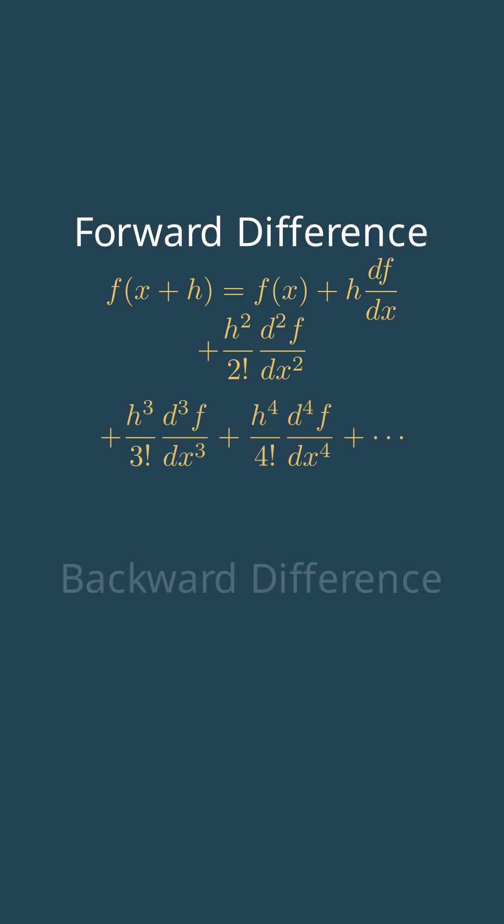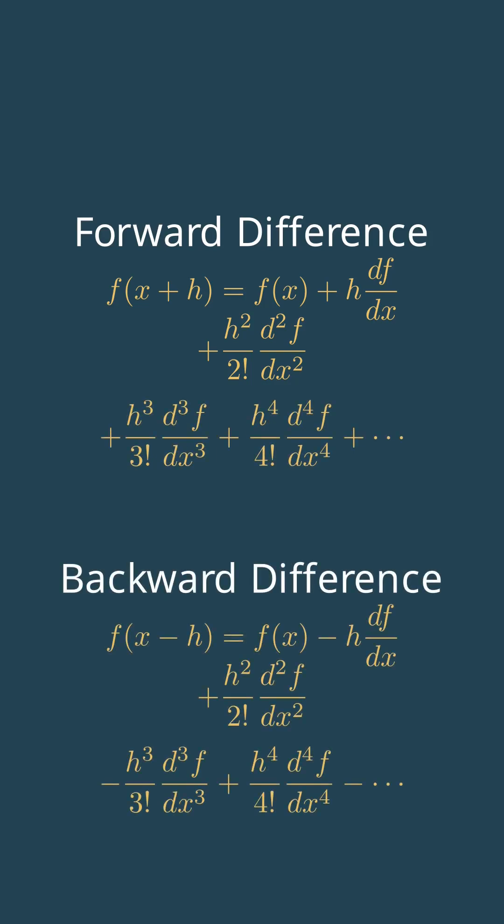We write a Taylor expansion forwards and backwards. The magic is the messy higher order terms - we can ignore them.